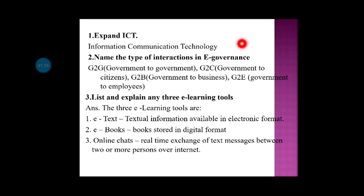Expand ICT. Name the types of interactions in e-governance. The types are: G2G — Government to Government, G2C — Government to Citizens, G2B — Government to Business, and G2E — Government to Employee. These cover government-to-government, government-to-citizen, government-to-business, and government-to-employee communication.